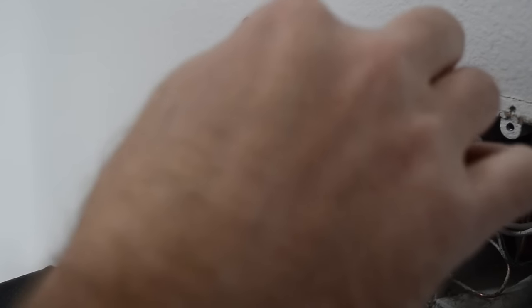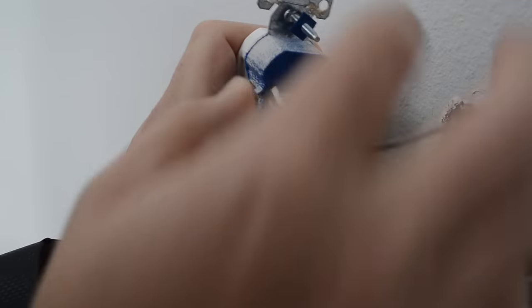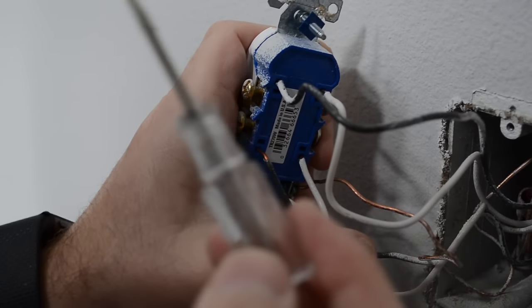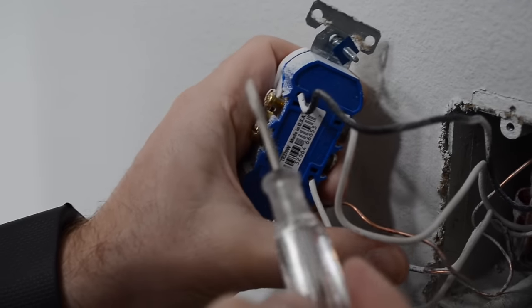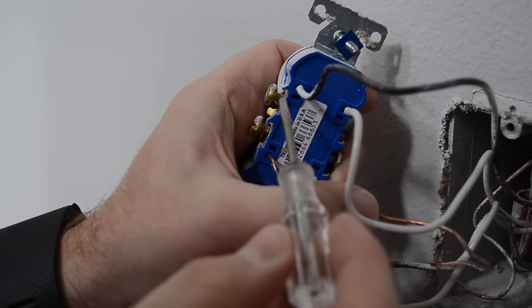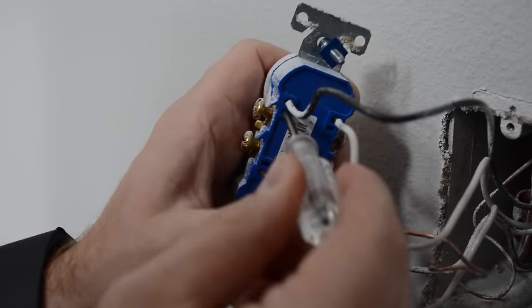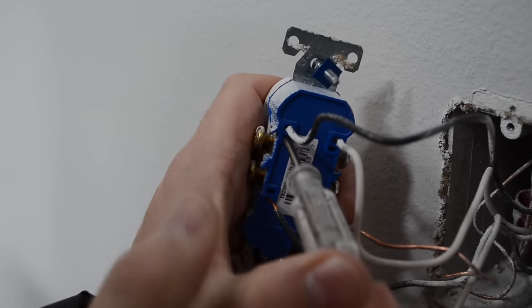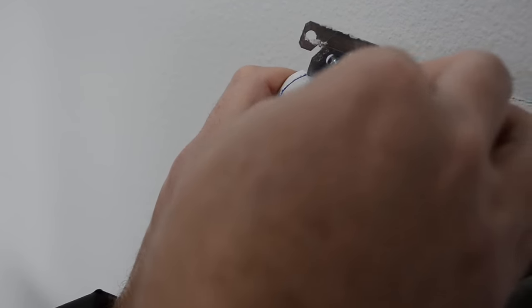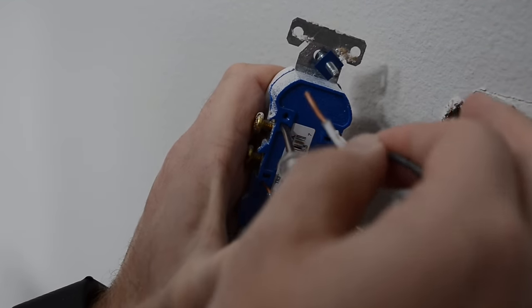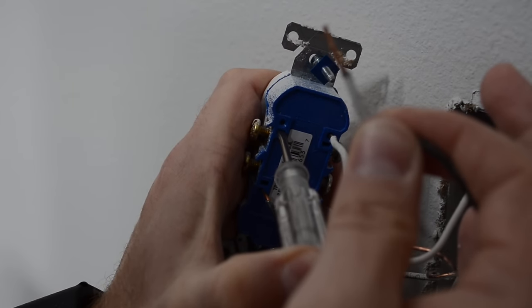Okay, I'm going to show you that one more time. What we do is we take the small screwdriver and stick it into the rectangular slot that's directly under the wire. We push that in with our thumb and pull the wire with the other hand. It's that simple.